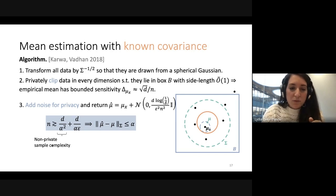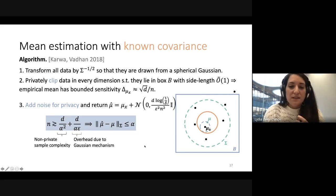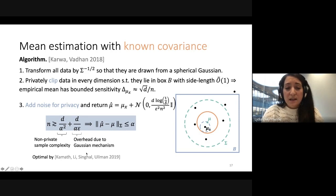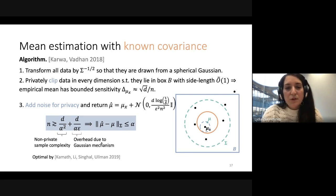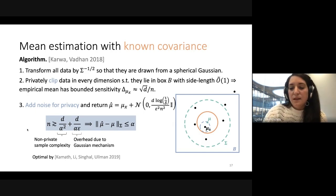The d over alpha squared is the non-private term of the sample complexity, and d over alpha epsilon is the overhead due to the Gaussian mechanism. This is actually optimal by Cummings-Singhal-Ullman: if we know the covariance, this is the best sample complexity achievable for an epsilon-delta differentially private estimator. And this is what we're aiming for — except we don't know the covariance.